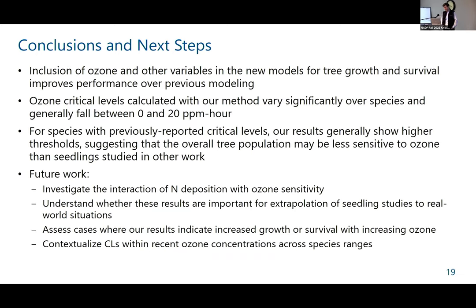To wrap up: our machine learning modeling to understand the relationship between ozone exposure and tree growth and survival, including new covariates, has improved model performance over our previous approaches. The ozone critical levels calculated with our method vary significantly across species but generally fall between 0 and 20 parts per million hours. For comparison with previously reported values, our results show generally higher thresholds than what had previously been reported.